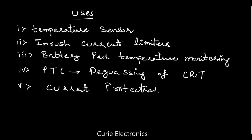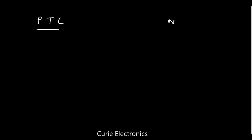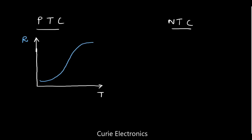Now let's understand what is a PTC thermistor and what is an NTC thermistor. PTC means positive temperature coefficient, and NTC means negative temperature coefficient. For a PTC thermistor, this graph shows resistance on the y-axis and temperature on the x-axis — when temperature increases, the resistance also increases. That is what PTC means.